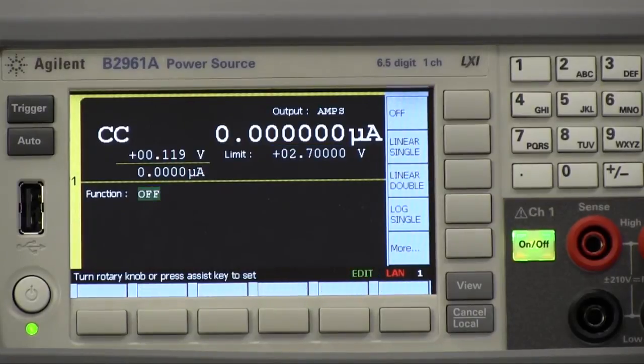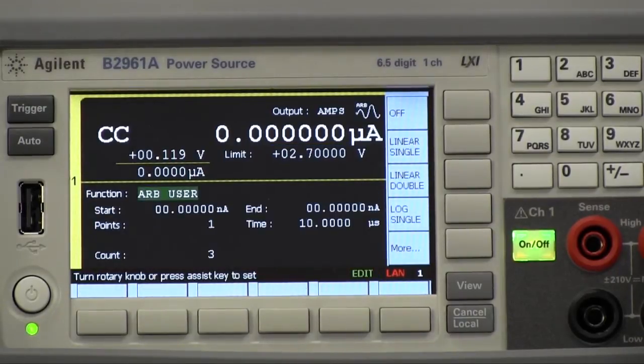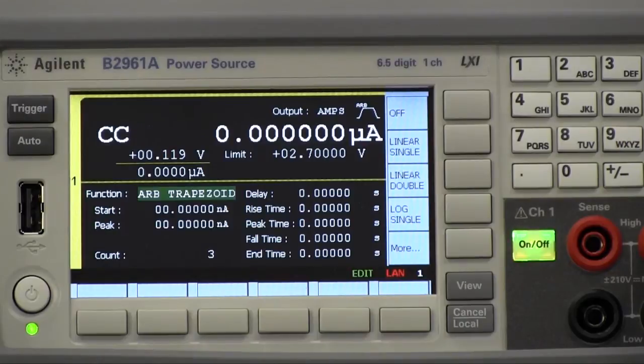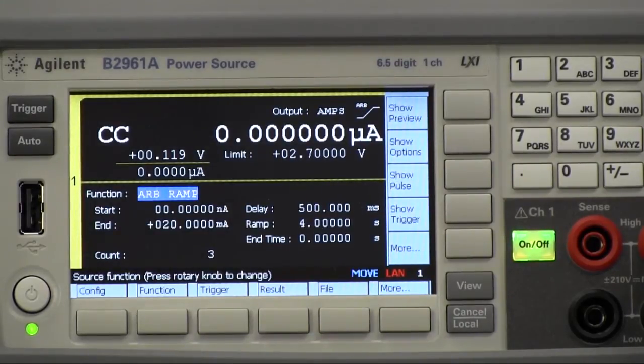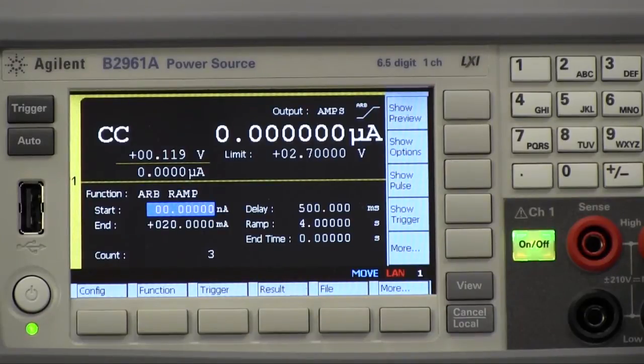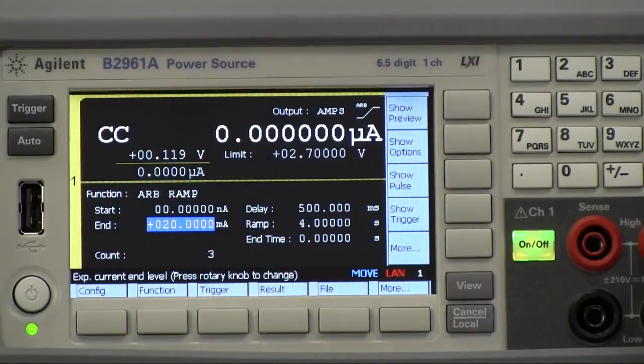Now I'm going to move down to my functions and move down to ramp. Select ramp. I'm going to go ahead and start. So 0 amps is fine. We're actually going to go up here to 20 milliamps. So that also is good.